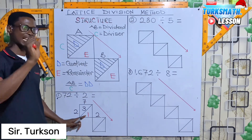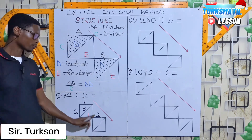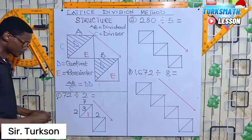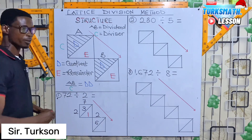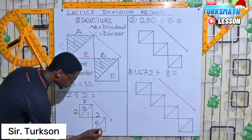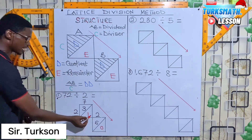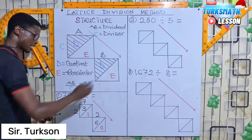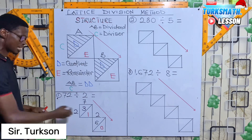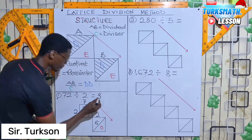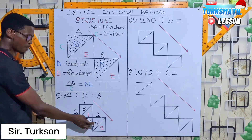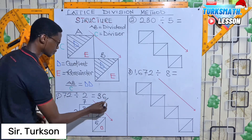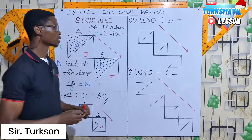The remainder 1 is now tens, so 10 plus 2 gives us 12. How many 2s can we get from 12? That is 6 remainder 0, because 2 times 6 equals 12. Now we read the quotient from the upper part of the lattice: the first upper value is 3, the second upper value is 6. Therefore, 72 divided by 2 equals 36.